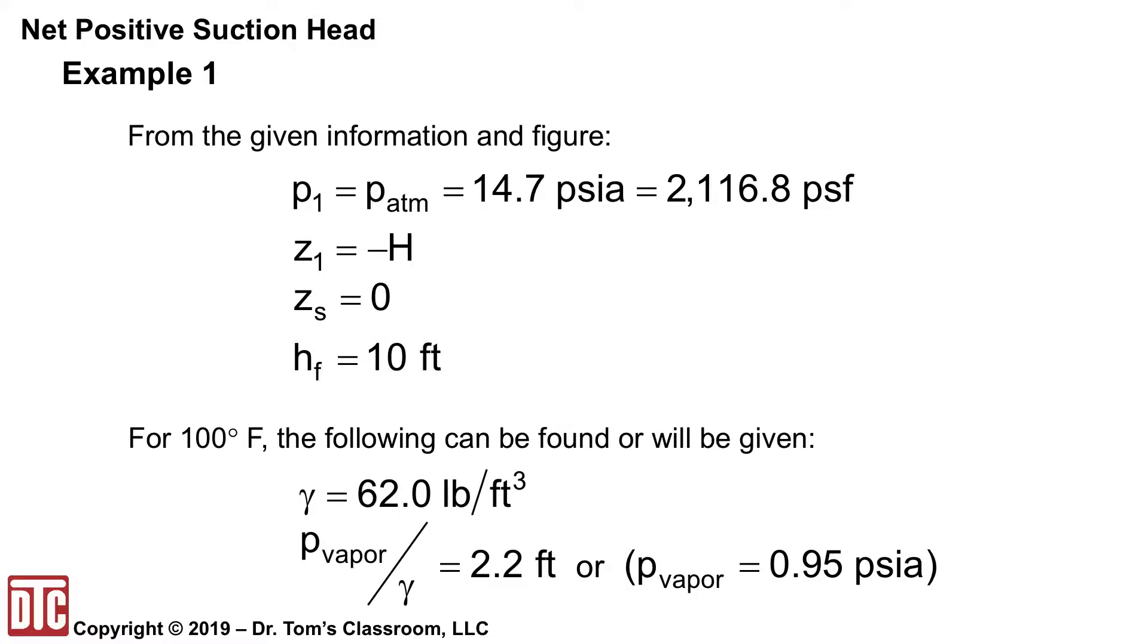And then either you can find it or probably given the gamma is 62.0. Higher the temperature is smaller. Standard is 62.4. And then many times you are given for the vapor pressure, you're given vapor pressure over gamma and you're given it in feet and we need it anyway in feet. Or they may give you the vapor pressure as PSIA in which you would have to calculate that. You'd have P over gamma in your calculations. So it just depends on what information they've given you.